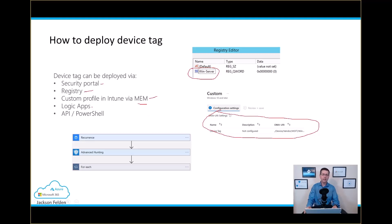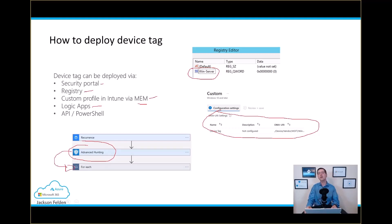I've been using Logic Apps quite a lot lately — this is really interesting. What we do is create an advanced hunting query to find the devices we want to apply the tag to, and then use a command to apply the tag. Please check the video description below to find all the links to my additional videos where I show all the steps to do that.